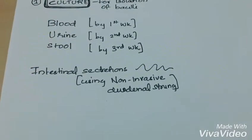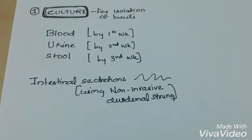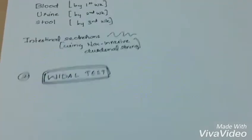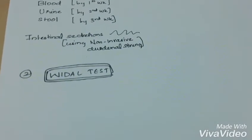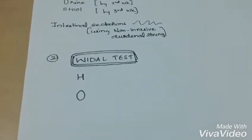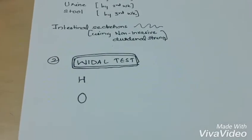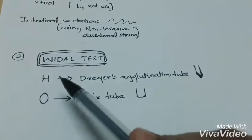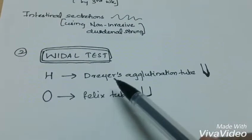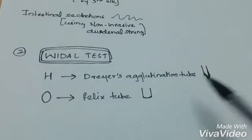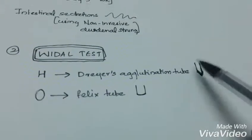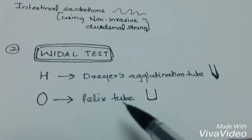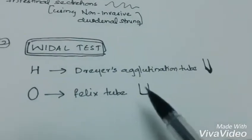Also, we can do intestinal secretions culture using a non-invasive duodenal string. Second one is Widal test. Widal test is for measuring H and O agglutinins of typhoid and paratyphoid bacilli in patient sera. H antigen is usually taken in Dreyer's agglutination tube, which is a narrow, conical-based tube, and O antigen is taken in Felix tube, which is a short, round-bottom tube.